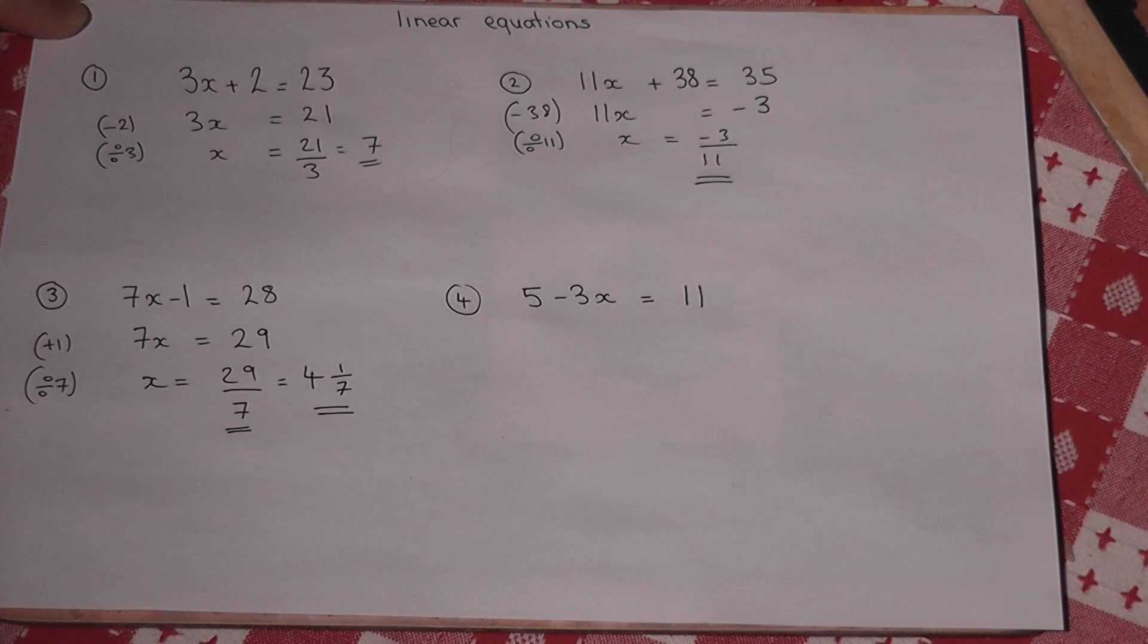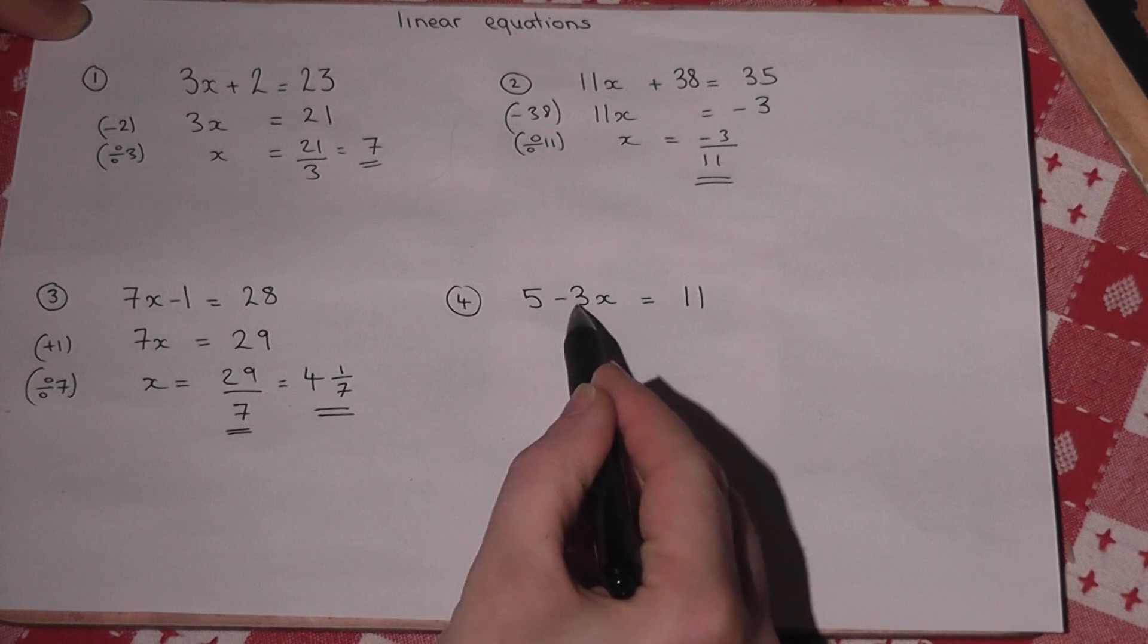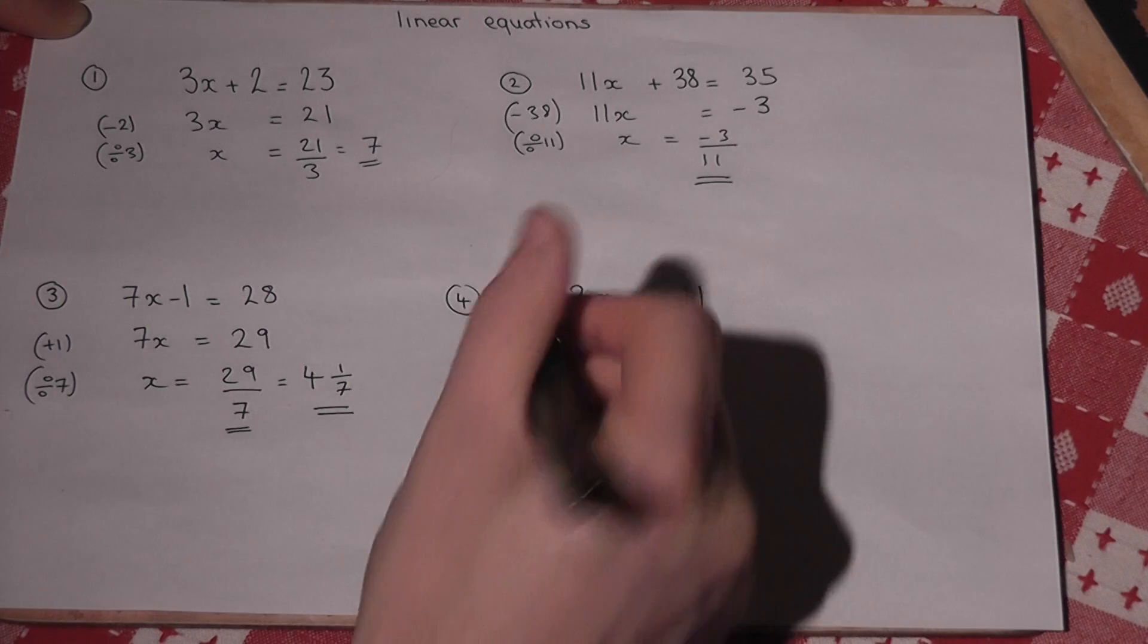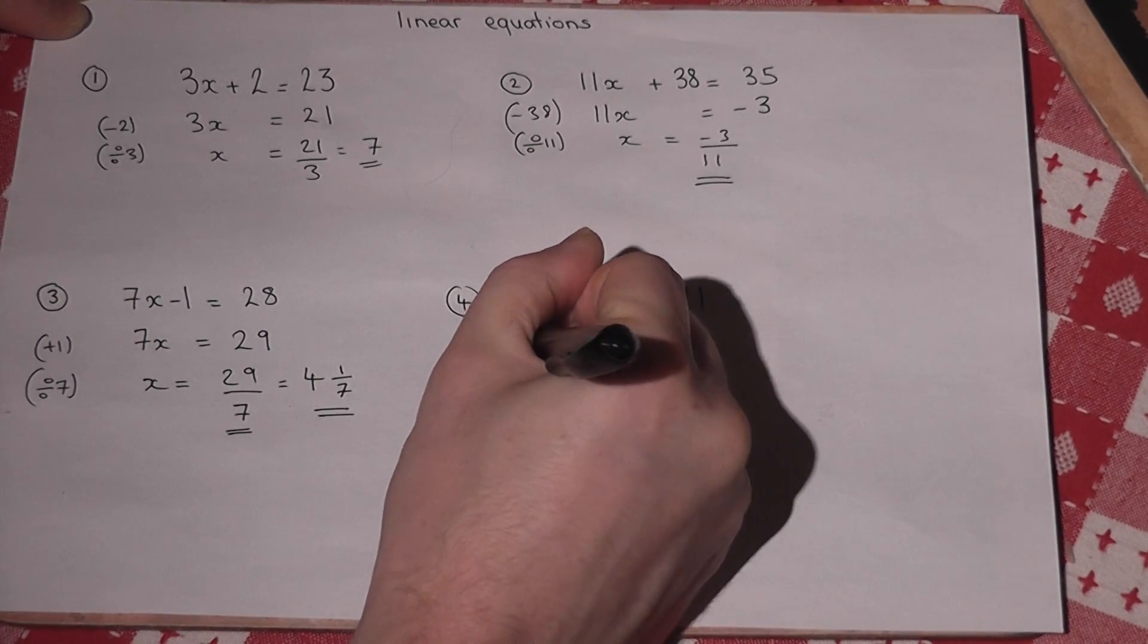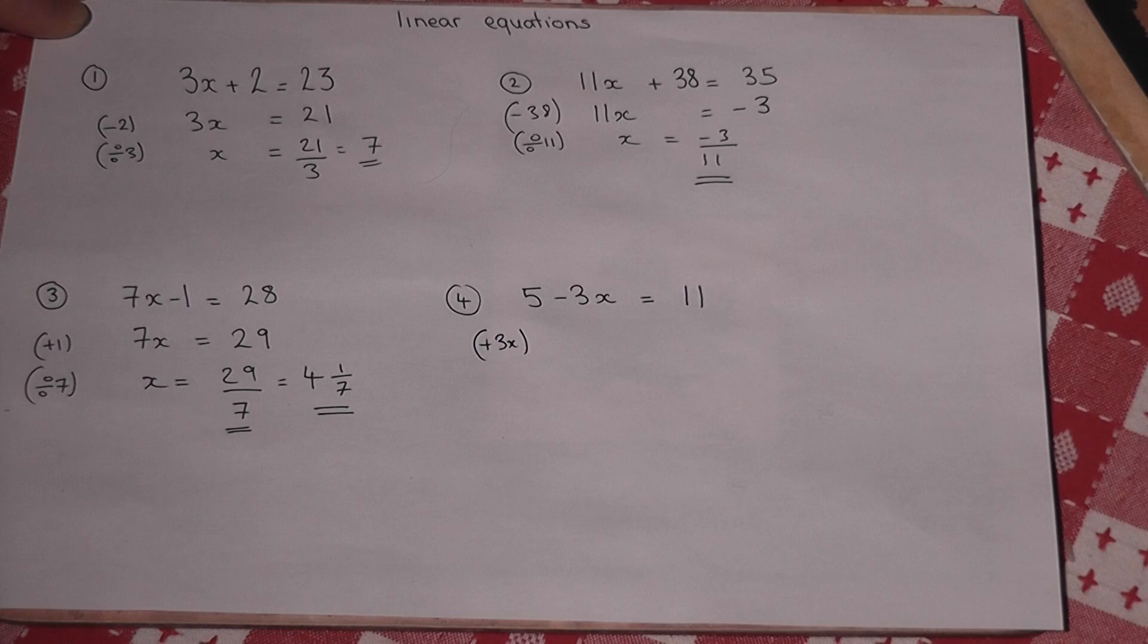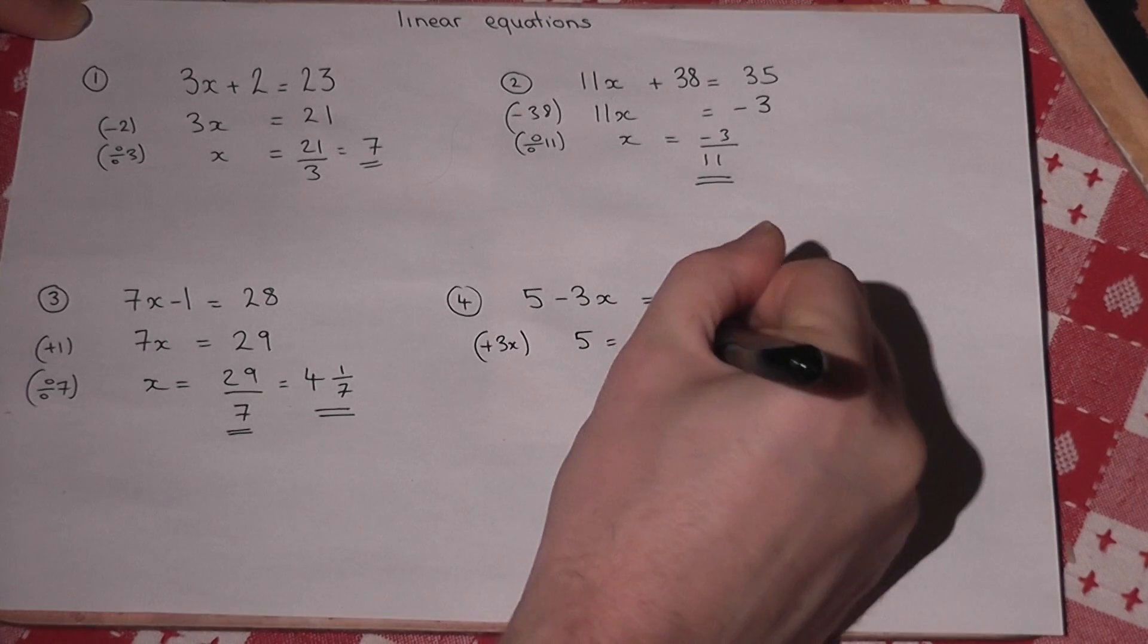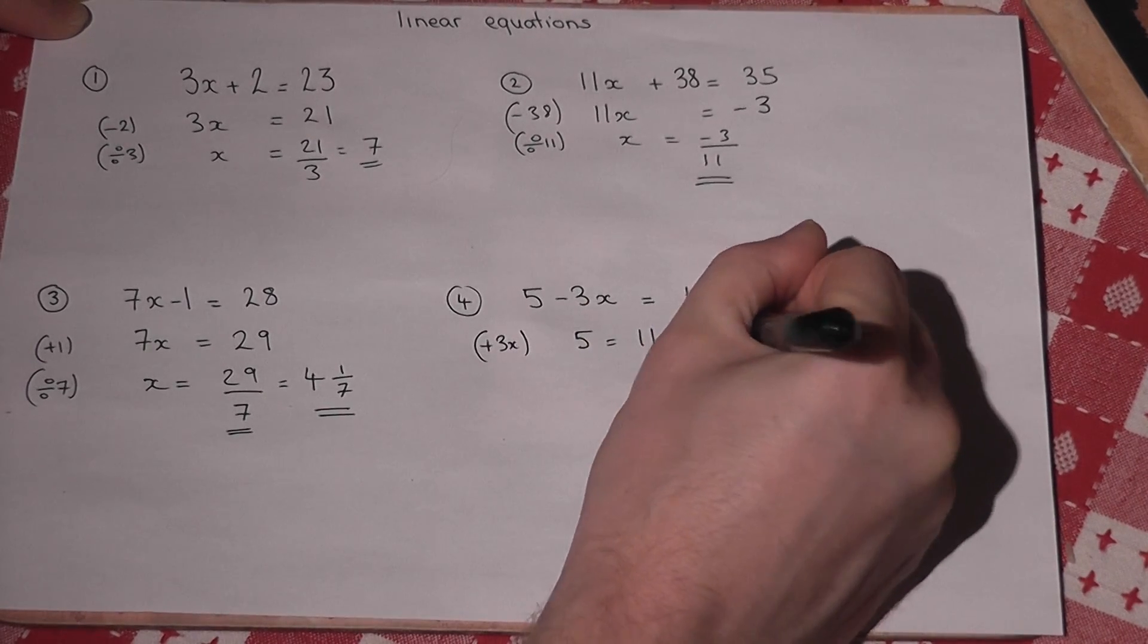The fourth example has a negative coefficient of x. And there's a trick to this type of question. If I begin by adding 3x to both sides, the minus 3x cancels out. So I'm left with 5 equals 11 plus 3x.